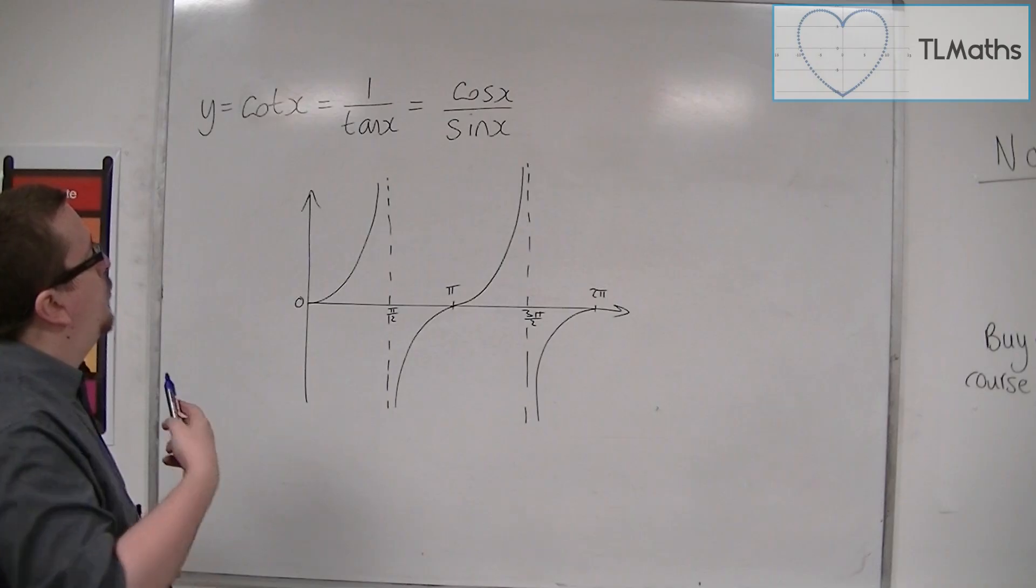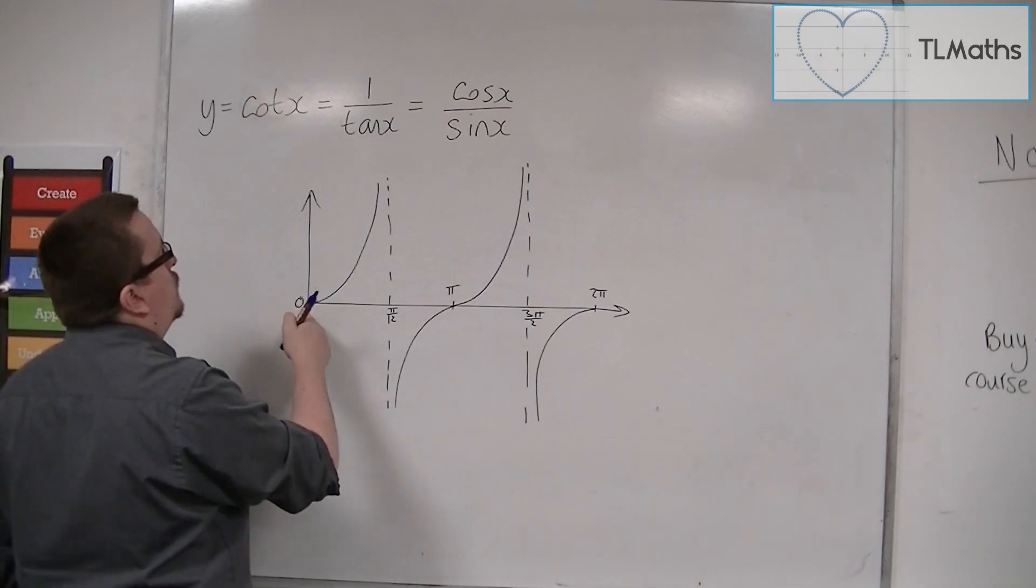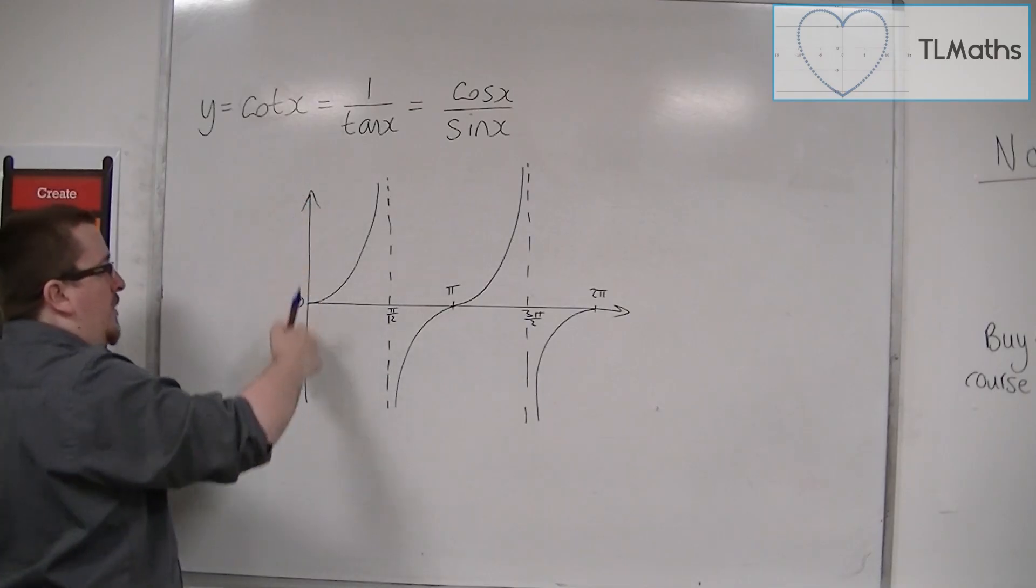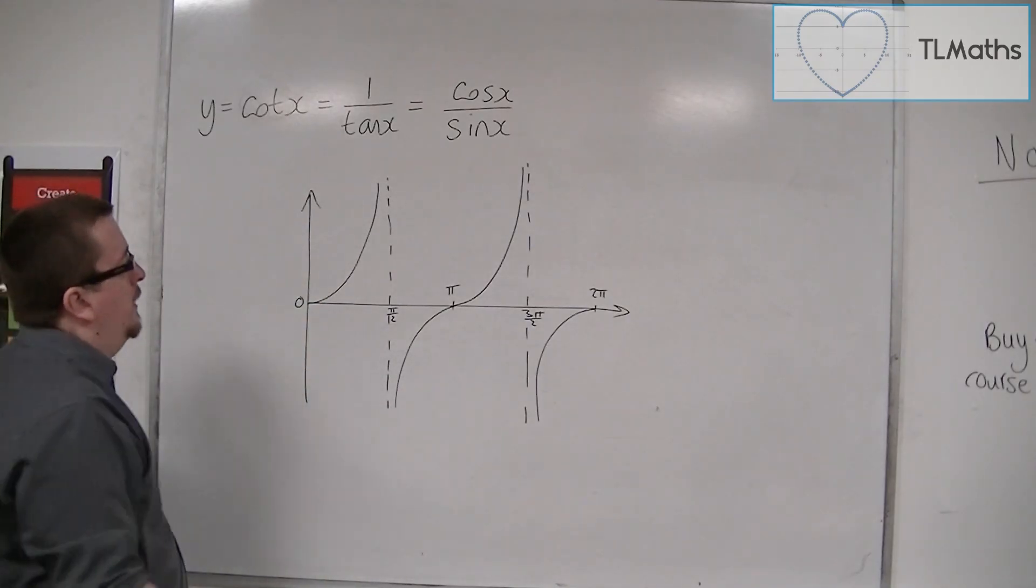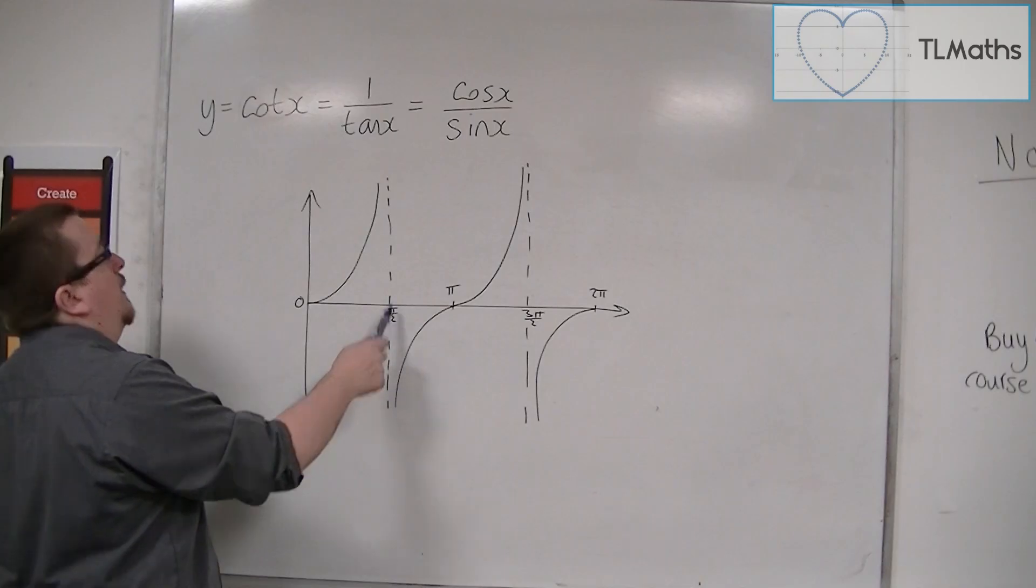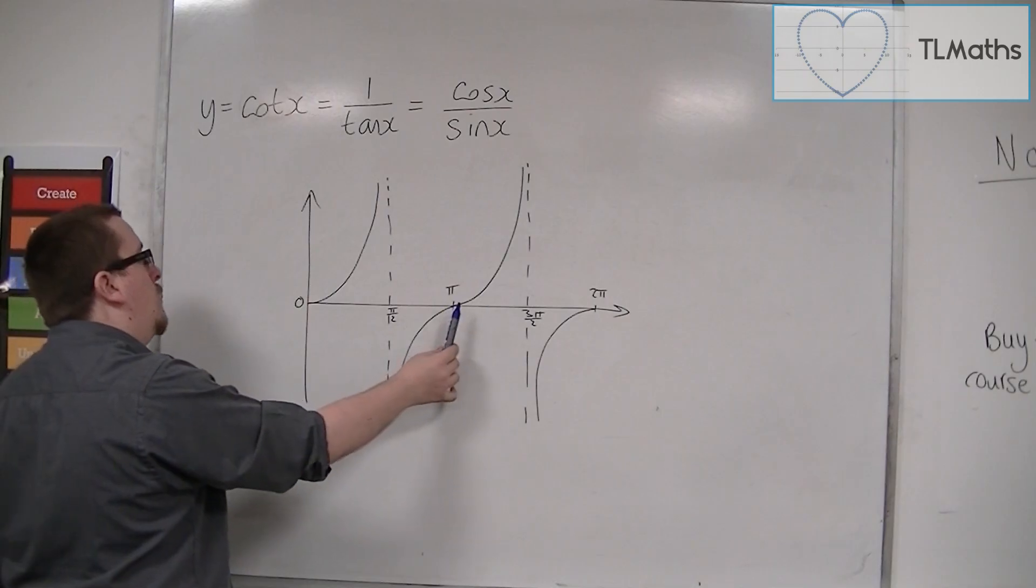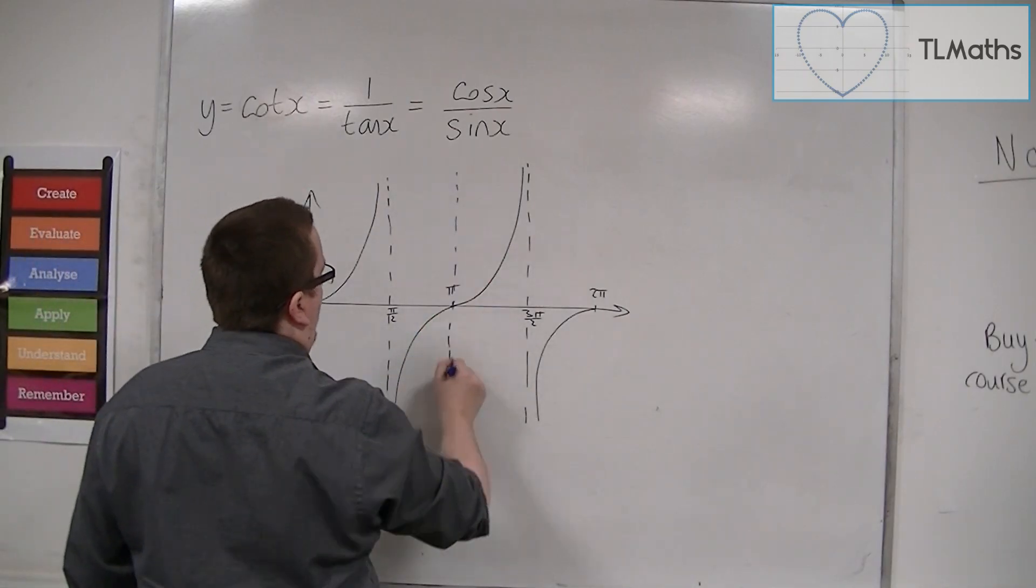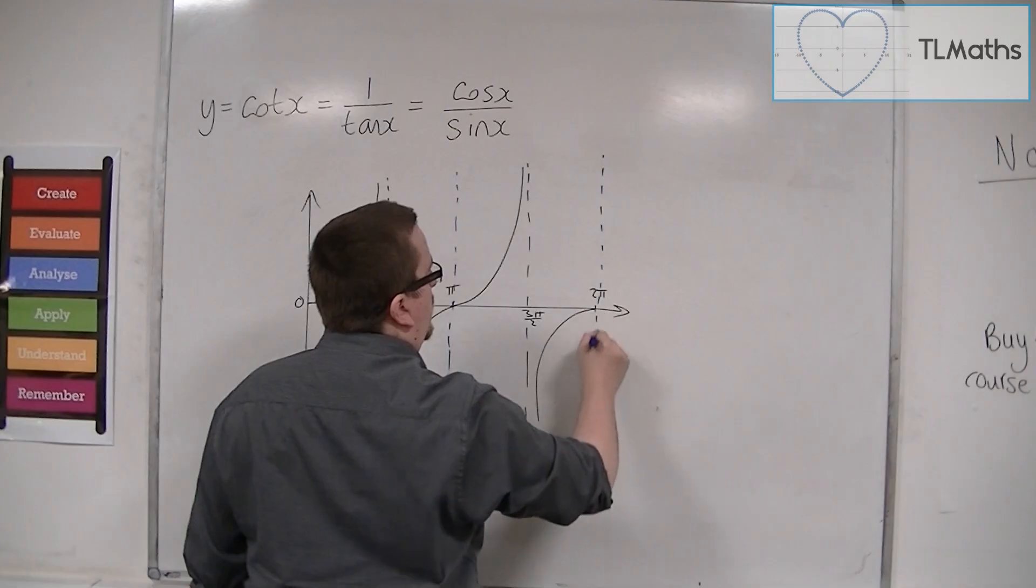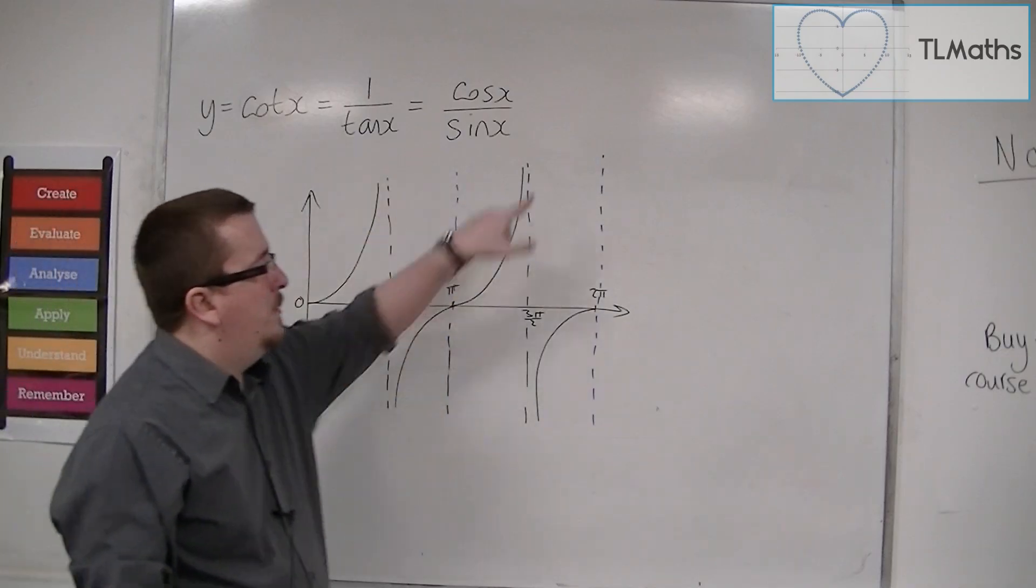Now cot is 1 over tan. So when x is 0, tan of 0 is 0, and so we have 1 over 0, so we must have an asymptote at the y-axis. Now when x is π over 2, well let's go for π first. When x is π, tan of π is 0, and so we must have an asymptote at π. And in a similar way, it's 0 at 2π as well. So we have asymptotes at 0, at π, and at 2π for cot.